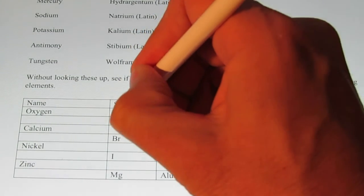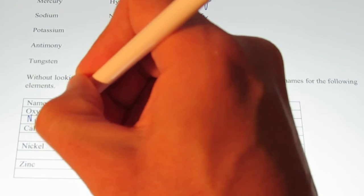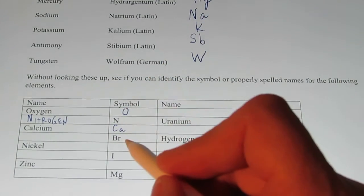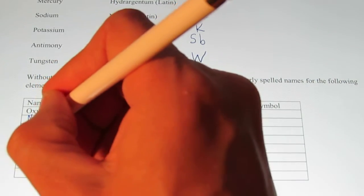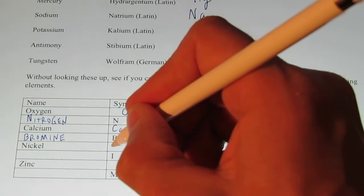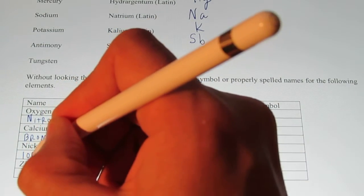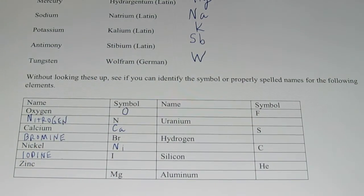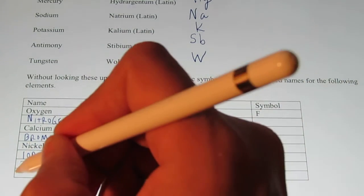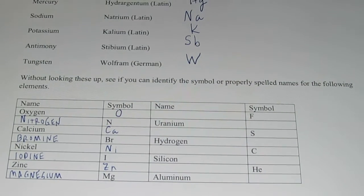Okay. Let's see how you did. Of course, the symbol for oxygen is O. N is the symbol for nitrogen. N-I-T-R-O-G-E-N. The symbol for calcium is C-A. B-R is the symbol for the element bromine. B-R-O-M-I-N-E. And of course, the symbol for nickel is N-I. I is the symbol for iodine. I-O-D-I-N-E. The symbol for zinc would be Z-N. M-G is the symbol for magnesium. M-A-G-N-E-S-I-U-M.